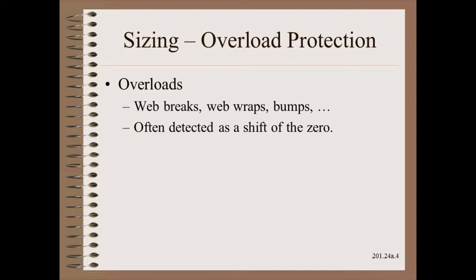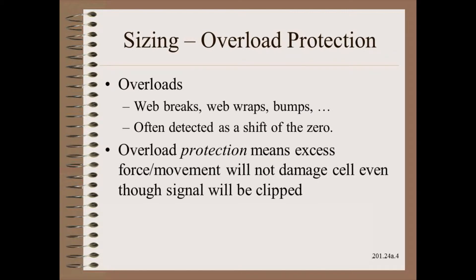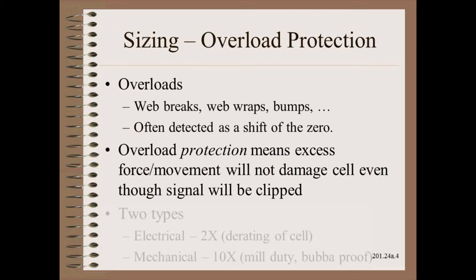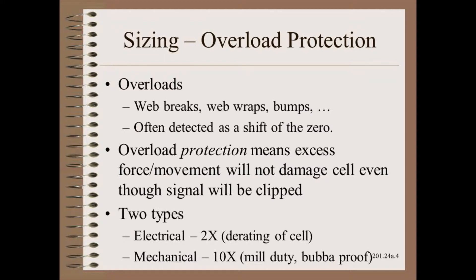Overloads are a regular part of the real world. You don't want to have these events damage the cell so that it needs to be re-zeroed or worse yet replaced. These events can come from any number of different sources such as web breaks, web wraps, and something bumping or even just tapping the load cell roller. Overload protection means that the cell will not be damaged even though momentarily the signal will be clipped and thus unusable. We could just increase the size of the load cell to accommodate overloads — this is in effect what electrical overload protection does.